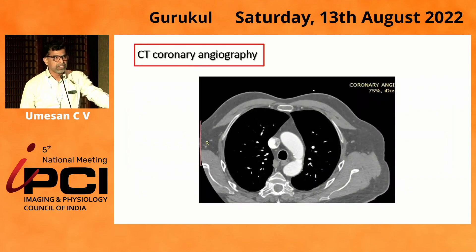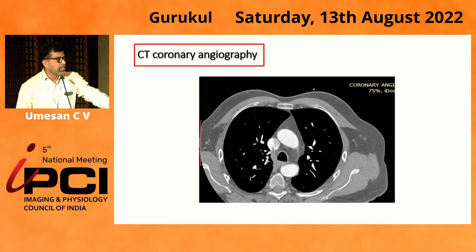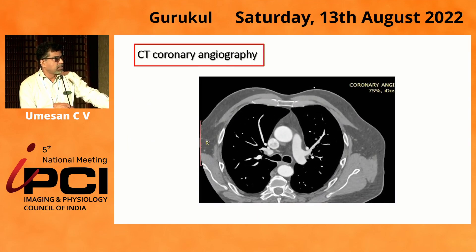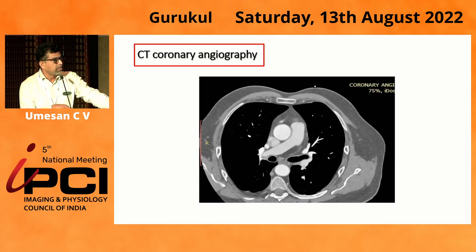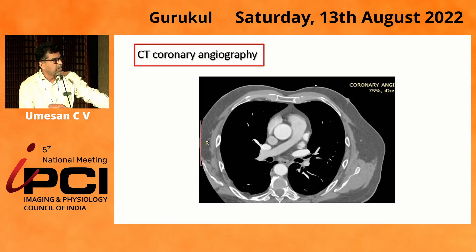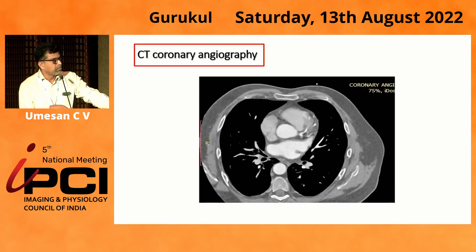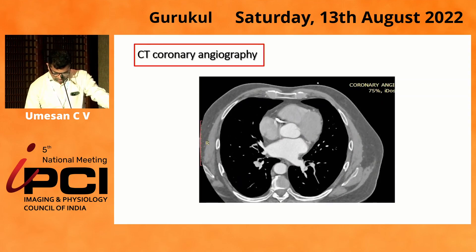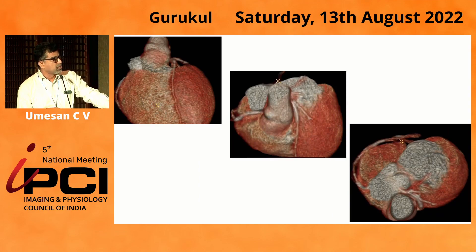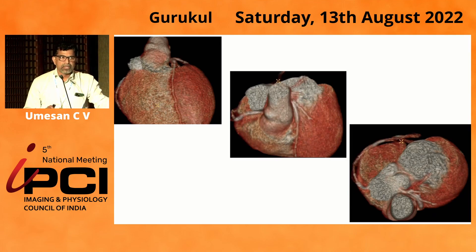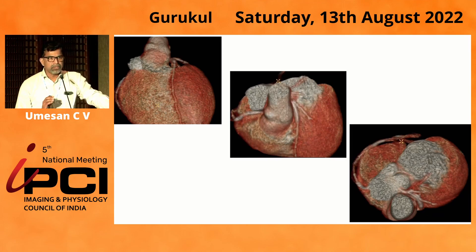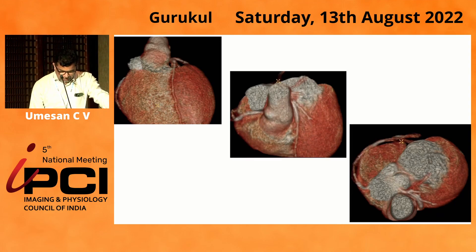We decided to do a CT angiogram, but it didn't clarify much. The images showed the left main, but there wasn't much additional information. They reported some dilatation in the proximal LAD and were not sure about the intraluminal stenosis. So this patient has a bulge in the left coronary system, probably an aneurysmal segment, with a totally occluded circumflex.